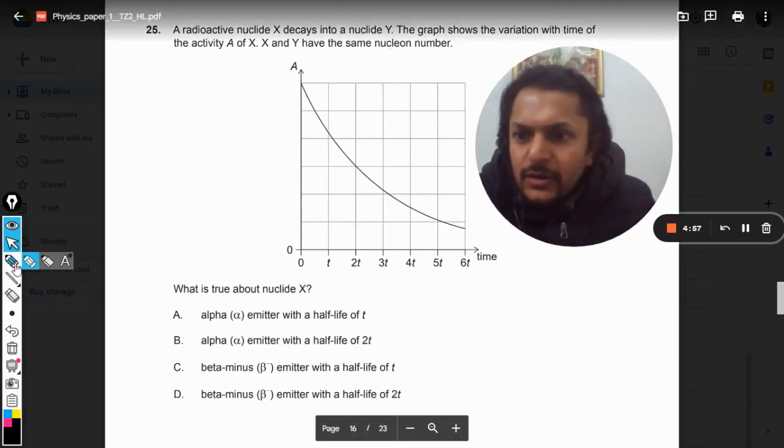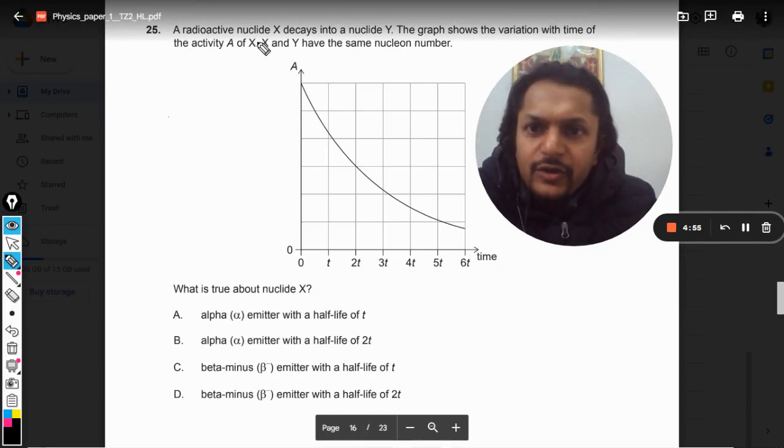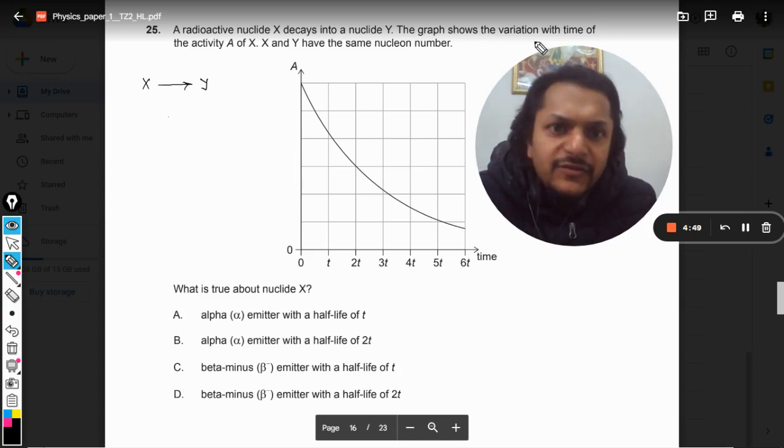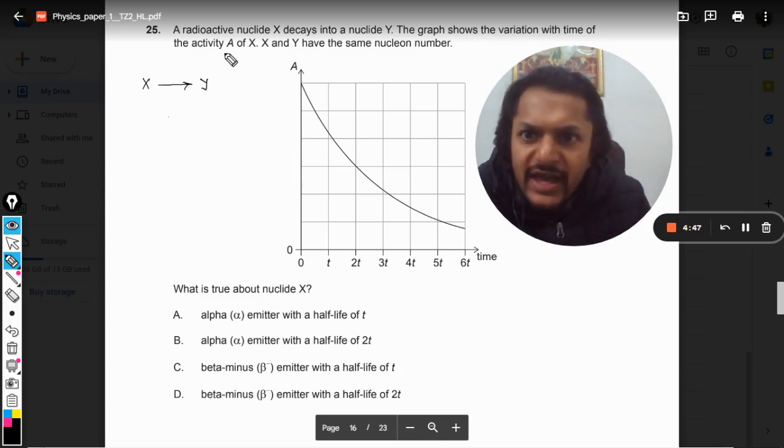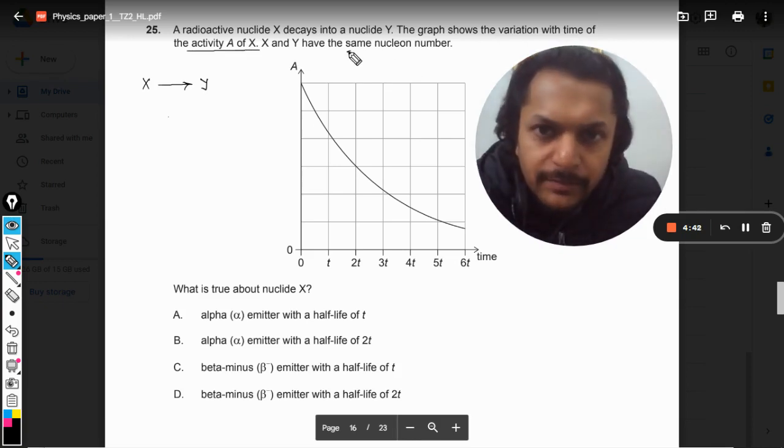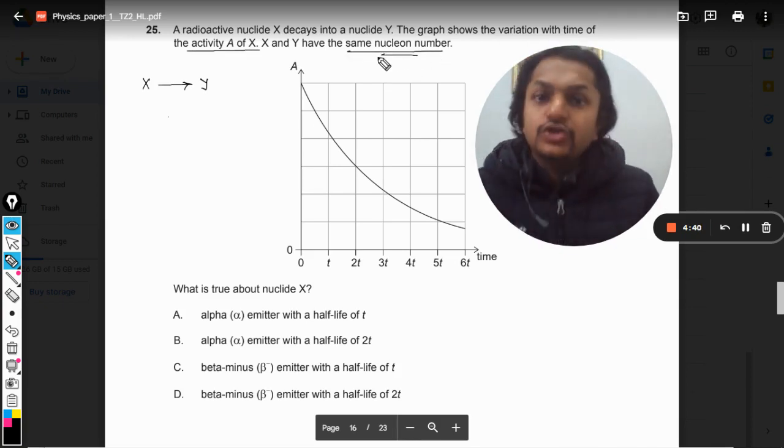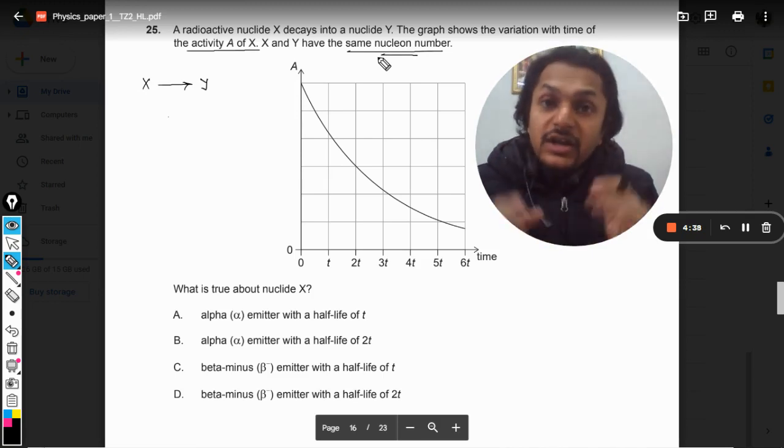Okay dear students, let us see how to do this question. A radioactive nuclide X decays into another nuclide Y. The graph shows the variation with time of the activity A of X. X and Y have the same nuclear number. Now this is very important information here - same nuclear number.